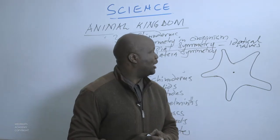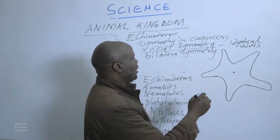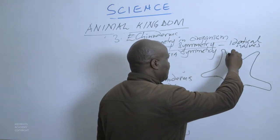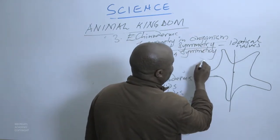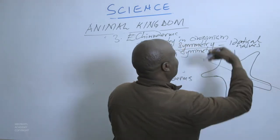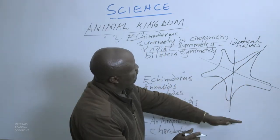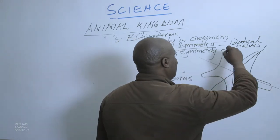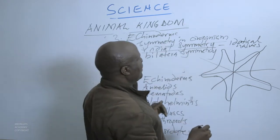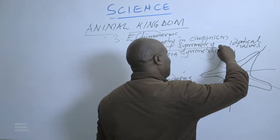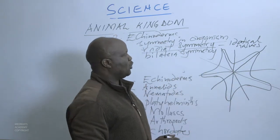This is a starfish — it has got its tentacles and looks like a star. When we talk about radial symmetry, if this is the middle, any line passing through will produce two equal halves. We can have one line, another line, another line cutting in the middle — in each case, this half will be exactly like the other half.